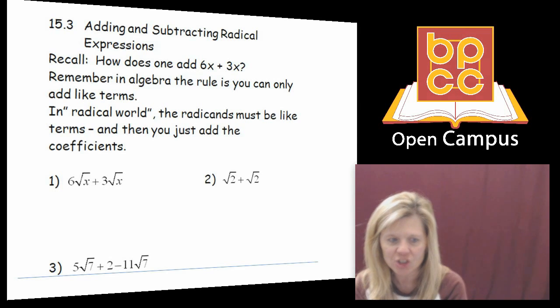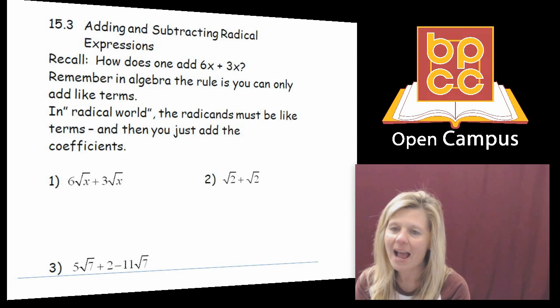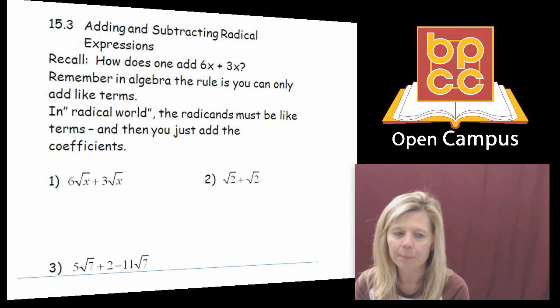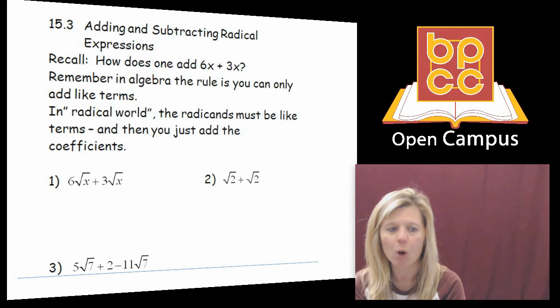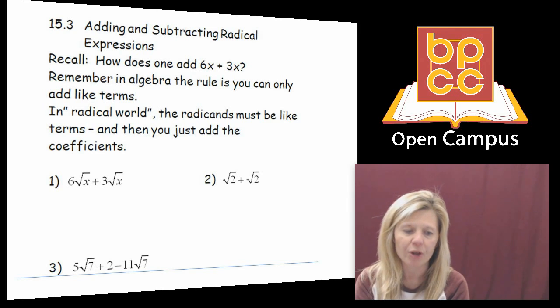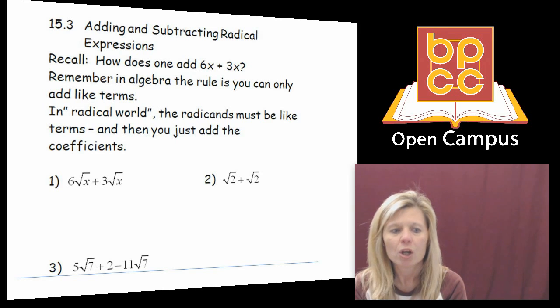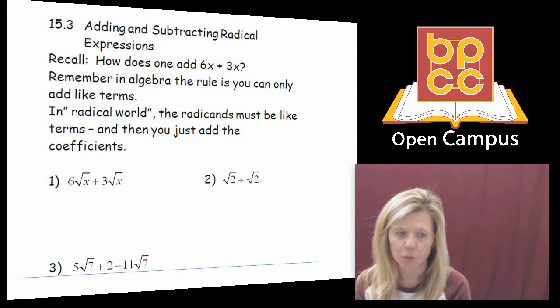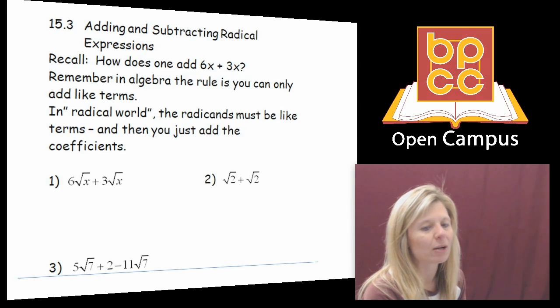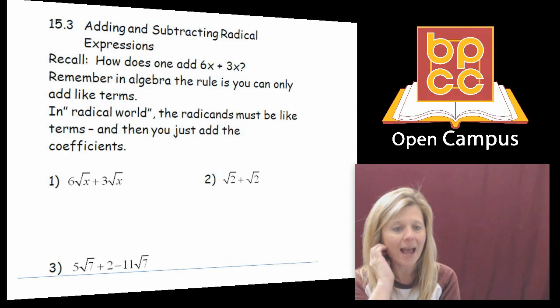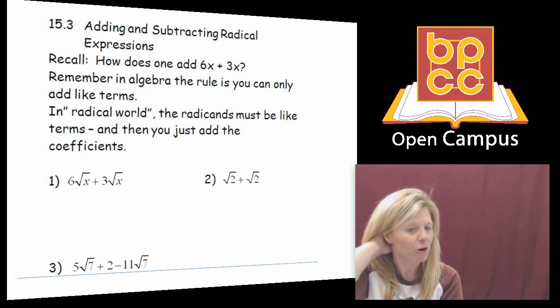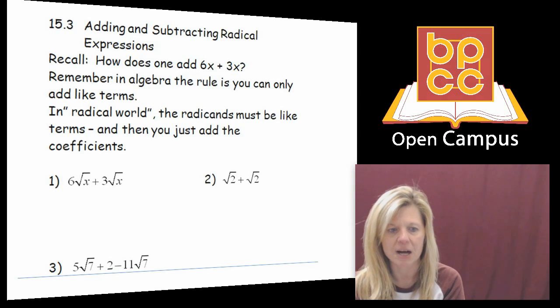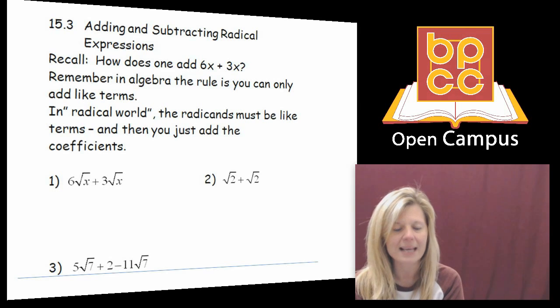Think back to the chapter on fractions, rational world. When I ask you to add the fraction 1/3 plus 1/3, can you add it? Sure you can. Why? Because the denominators are both 3s. So when you add 1/3 and 1/3, what do you get? 2/3. You do not add the denominator, the part that's alike stays the same. What you added was the numerators.